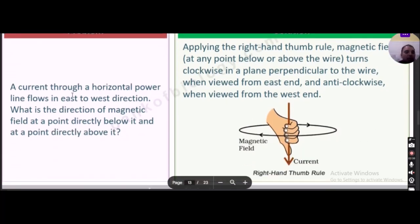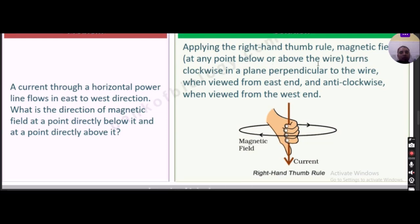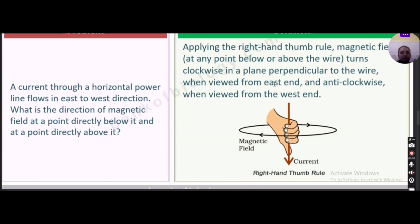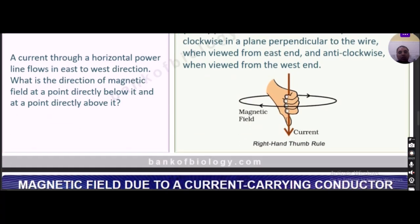A question based on the right-hand thumb rule: a current through a horizontal power line flows from east to west. What is the direction of the magnetic field at a point directly below it and above it? Applying the right-hand thumb rule, the magnetic field at any point below or above the wire turns clockwise in a plane perpendicular to the wire when viewed from the east end, and anti-clockwise when viewed from the west end.